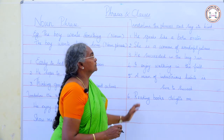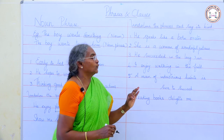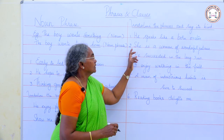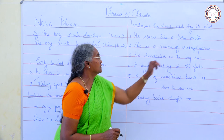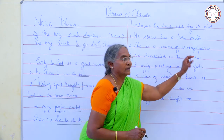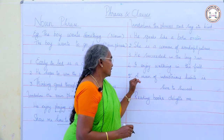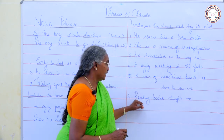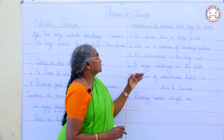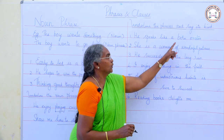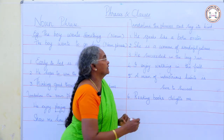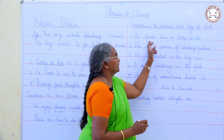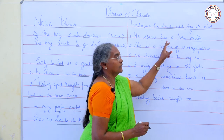Now I shall give you some sentences and you have to underline the phrases and say what kind each is. 'He speaks like a born orator.' How does he speak? 'Like a born orator' — so 'like a born orator' is the adverbial phrase, since it is a group of words qualifying the verb 'speaks.'